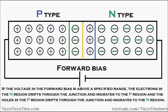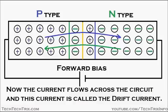If the voltage in the forward bias is above a specified range, electrons in the N region drift through the junction towards the P region, and holes in the P region drift through the junction and migrate towards the N region. As you can see, the electrons drift through the junction towards the P region and the holes drift through the junction towards the N region. Current then starts to flow across the circuit, and this current is called drift current.